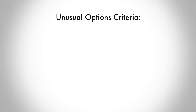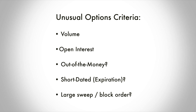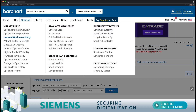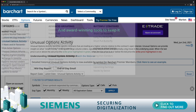These are some of the criteria to filter through in order to find a good option play you want to emulate: volume, open interest, is it out of the money, is it short dated, and is it a large sweep order or a large block order? You want to navigate to the options tab and click on most active options.